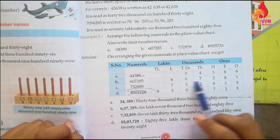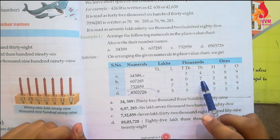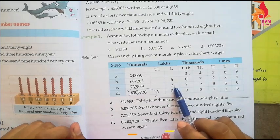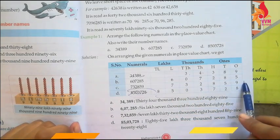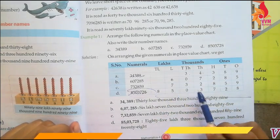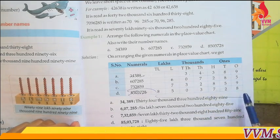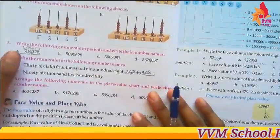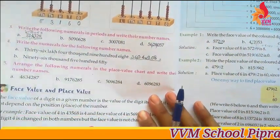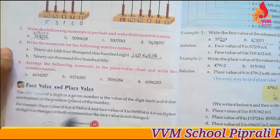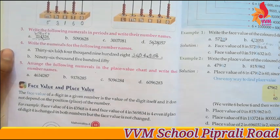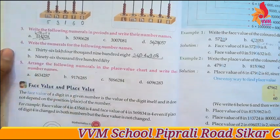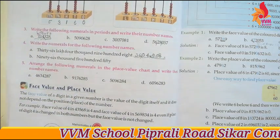More examples: 6,07,285; 7,32,859; 85,03,728. This way we can write them down. Then comes our exercise, which you will have to solve — writing number names for given numbers and converting numerals into a place value chart.